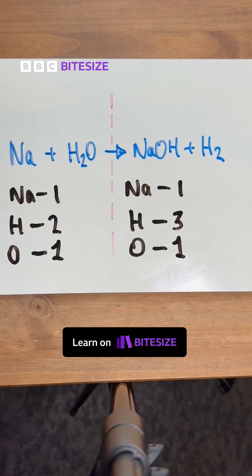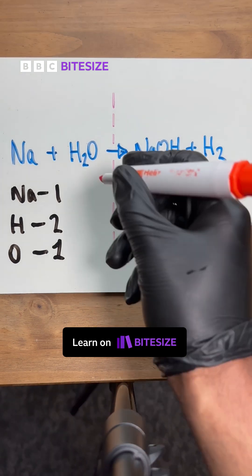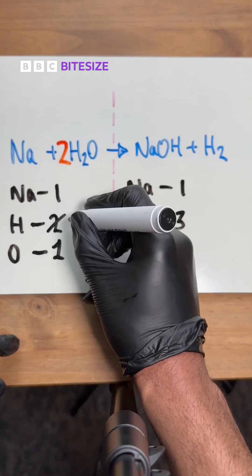So now we have to make sure that there's the same amount of each atom on each side. We're going to start with the hydrogen and put a two in front of the water because two times two equals four, so we now got four hydrogens on the left.